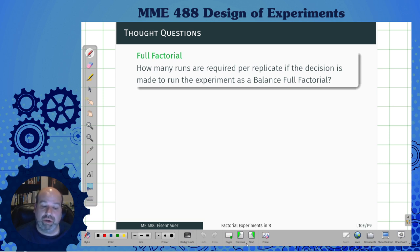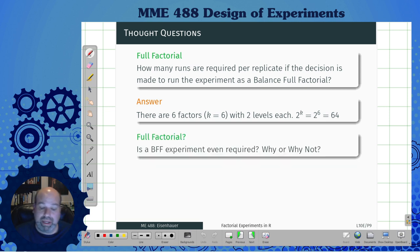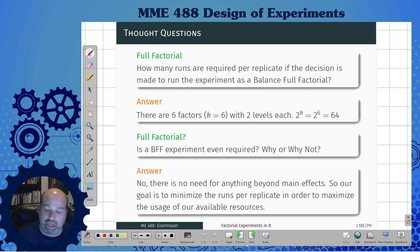So some thought questions. The full factorial: how many runs are required per replicate if the decision is made to run the entire experiment as a balanced full factorial? Well there's six factors, two levels each, so 2 to the 6 would have been 64 runs. Well we only have 40 so we can't do that. Is the full factorial experiment even required? Not really because we didn't need anything beyond our main effects. Our goal is to minimize the runs per replicate in order to maximize the usage of our available resources, which in this case is 40 runs.